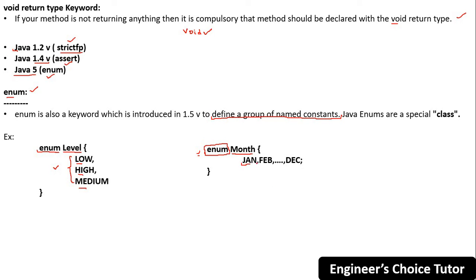In the Month enum, constants like Jan define January, February, March, April, May, through to December — defining all 12 months as a group of named constants. We will see this concept in detail later; for now just remember that we have this enum keyword in Java.